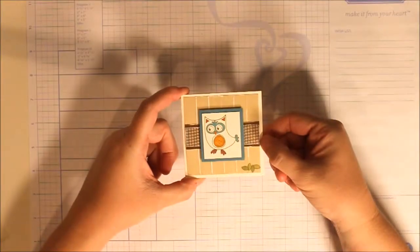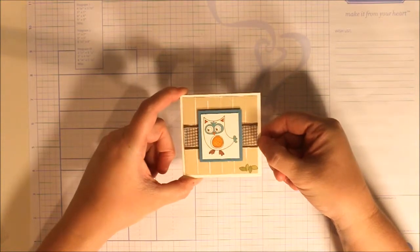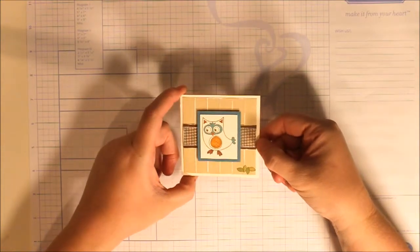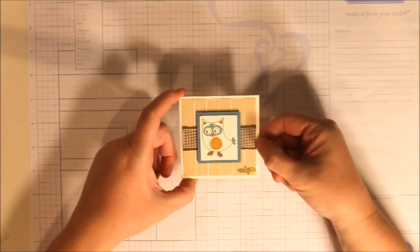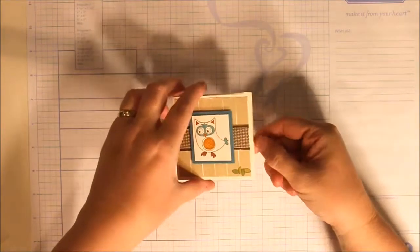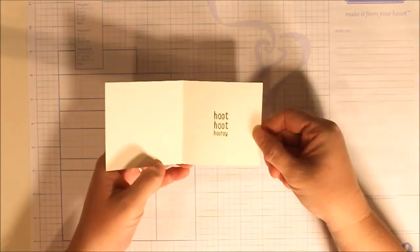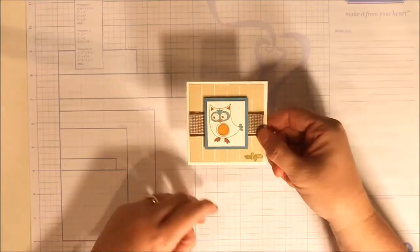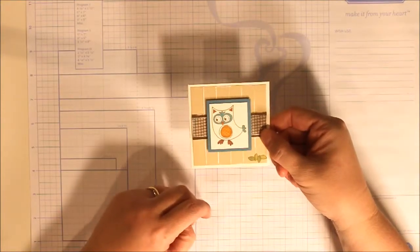Here is one of the finished products of the card we're going to make today. It is made using several of the papers from the Timberline paper pack and also there's a saying on the inside: Hoot Hoot Hooray. So we are going to show you today how to make this.